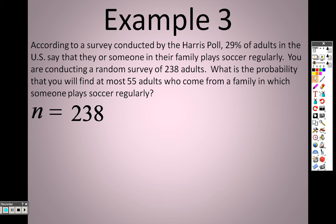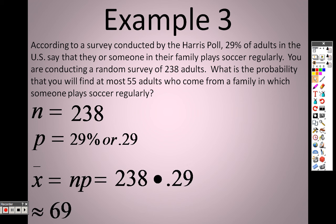N is 238 because that's the number of people who participated in the poll. P is the percentage, which is 29%, so we write that as 0.29. So, to find the mean, I take the two and multiply them together to get roughly 69 is the mean.